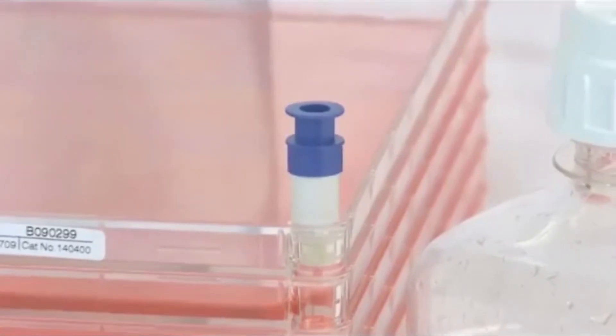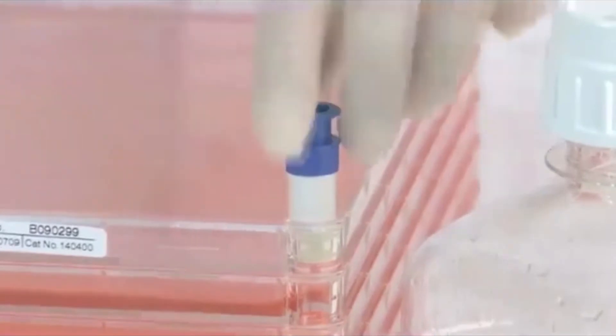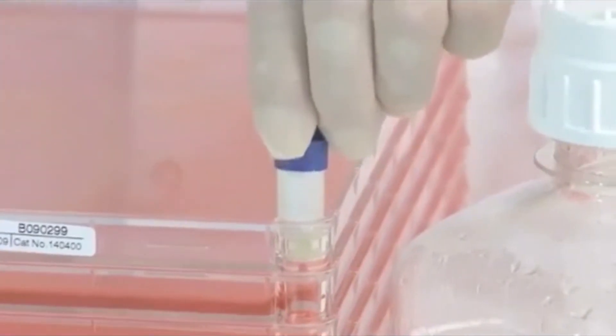To empty the EasyFill Cell Factory System through the smaller port, remove the blue cover cap and loosen the white vent cap approximately three quarters of a turn. Then simply pour the medium into the bottle.